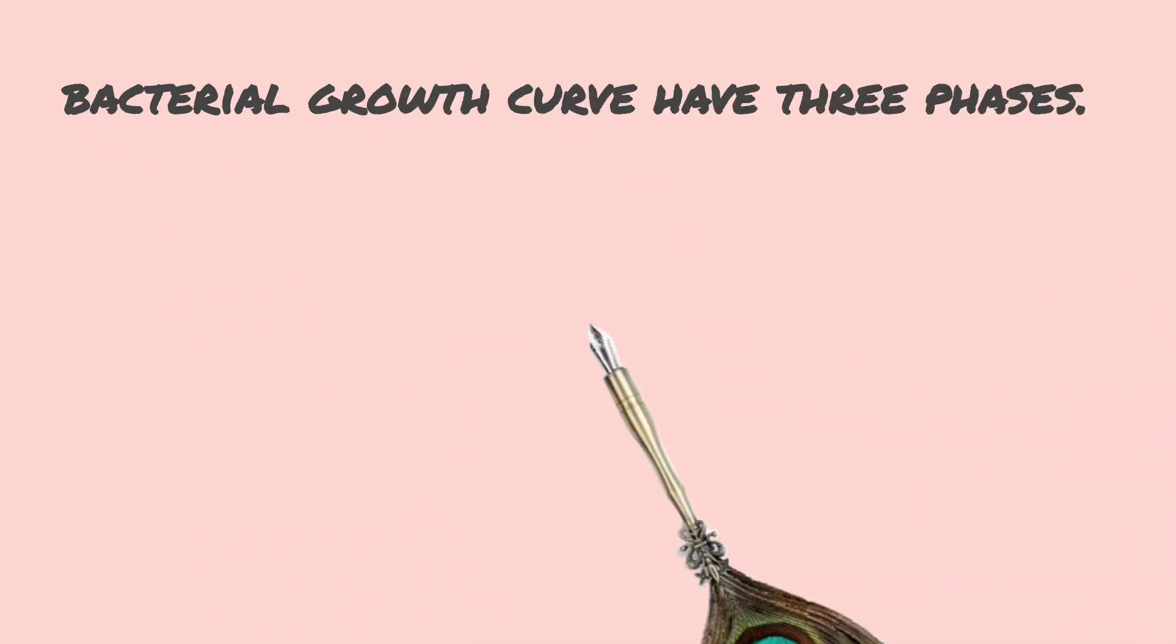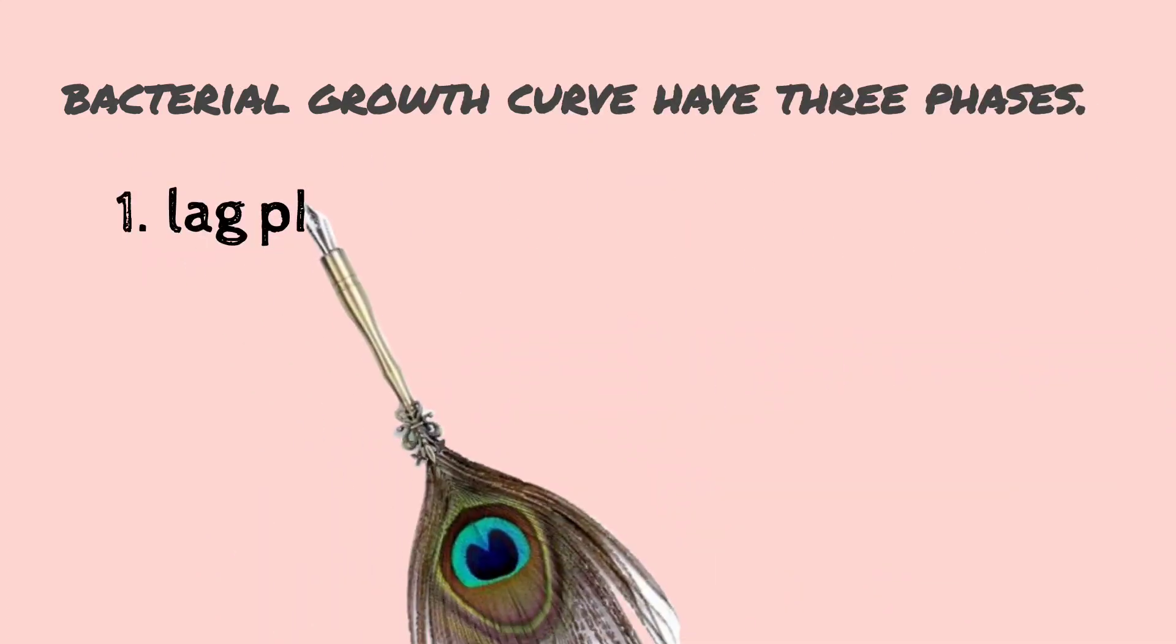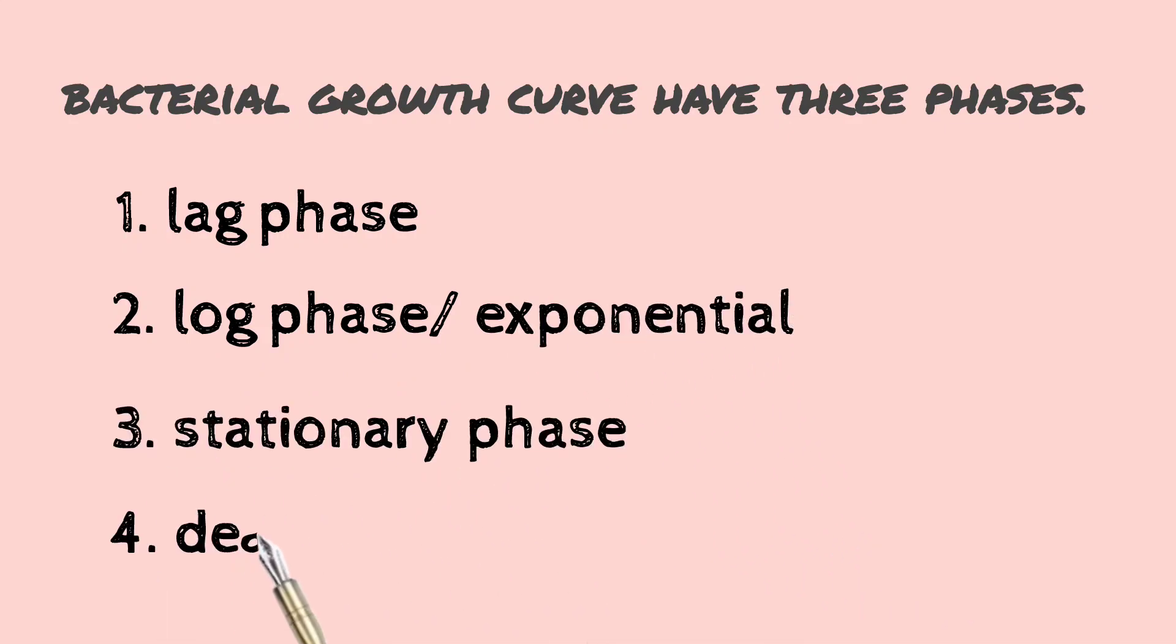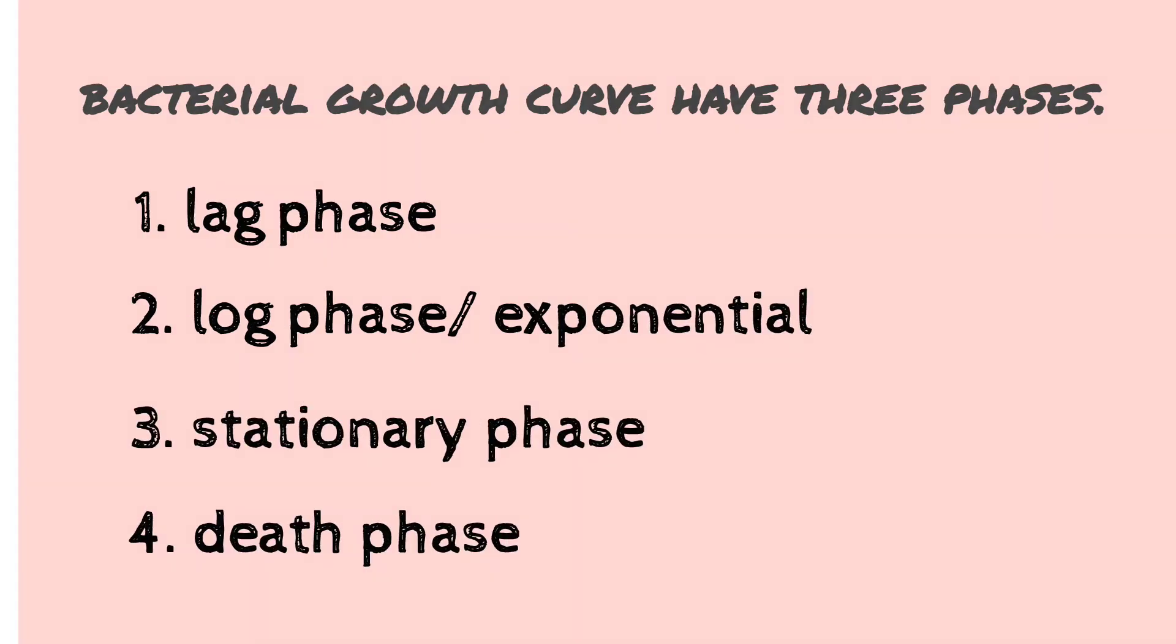The bacterial growth curve have four phases. First, the lag phase. Second, the log phase which is also termed as the exponential phase. Third, stationary phase. Fourth, death phase.